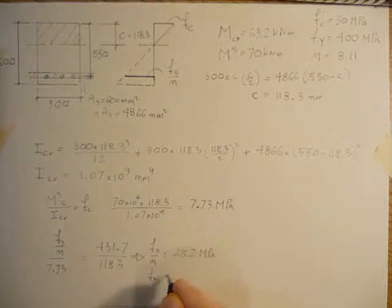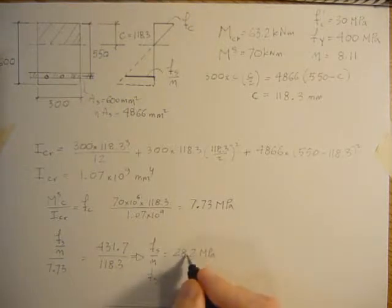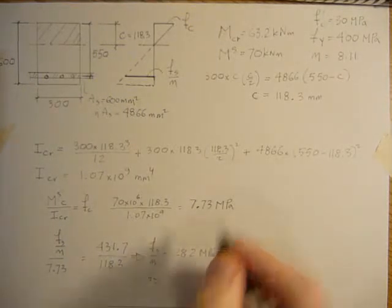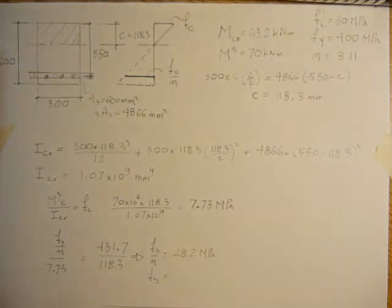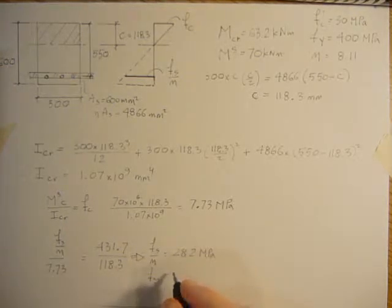But FS will be N times the 28.2, the real stress in the steel. So that's going to be 8.11 times 28.2. N times this is the stress. So that's 228.7.